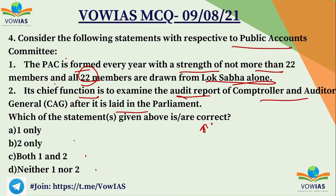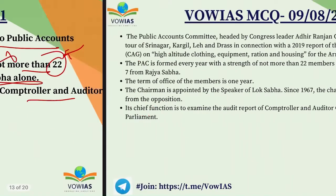If you see the first statement — it says all 22 members are from Lok Sabha, which is wrong. In fact, 15 are from Lok Sabha and 7 are from Rajya Sabha. So the first statement is wrong. The second statement is right. Therefore the correct answer is B — two only.